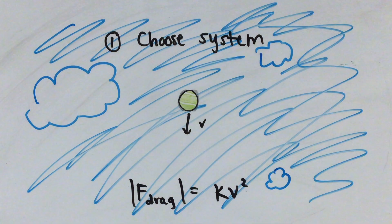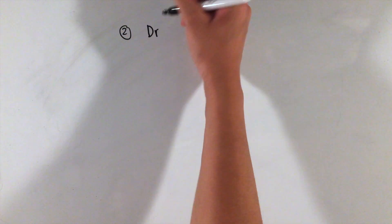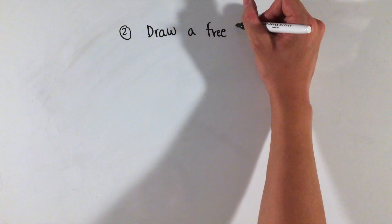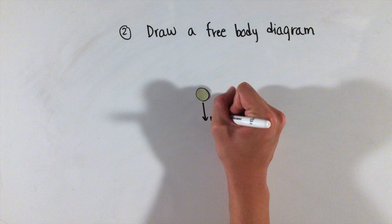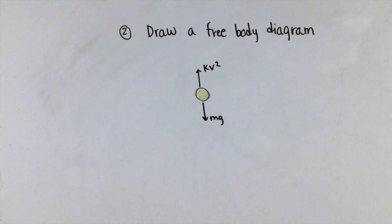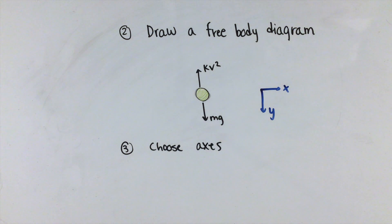To solve this problem and others, let's follow the same four-step process we learned from AP Physics 1, starting with selecting our system. Here, because we are only concerned with the motion of the tennis ball, let's choose our system to be just the tennis ball and nothing else. Step 2, drawing a free body diagram isn't hard either. Looking at our ball in the air, the only forces acting on it would be the force of gravity going downwards and our new air resistance force applied against this downward motion. Choosing our axes is straightforward as the motion is strictly vertical.